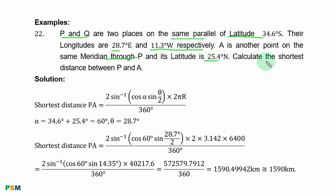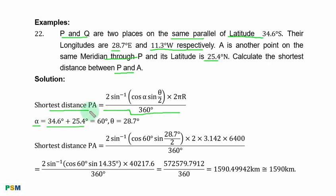Calculate the shortest distance between P and A. Solution: the shortest distance between P and A is given by this formula, where alpha, the angle of latitude, is found by true addition because points A and P are on different sides of the equator. Their angular difference is found by addition, giving 60 degrees. Theta, the angle of longitude, is 28.7 degrees.